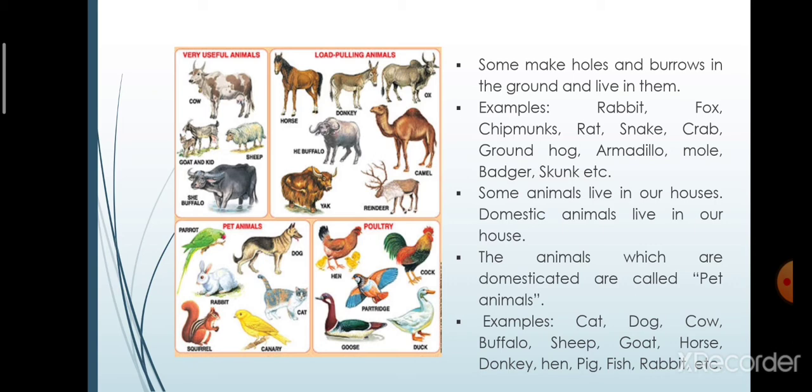Some animals provide us entertainment. They are pet animals which live along with us in our houses, like parrot, rabbit, dog, cat, squirrel, etc. Some are poultry animals which provide us meat and eggs, like hen, cock, partridge, goose, duck, etc.